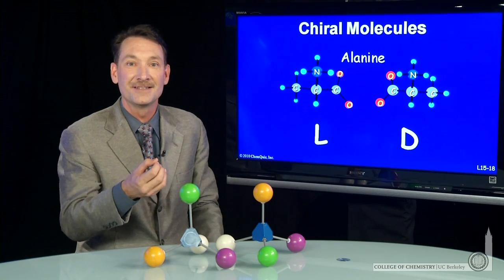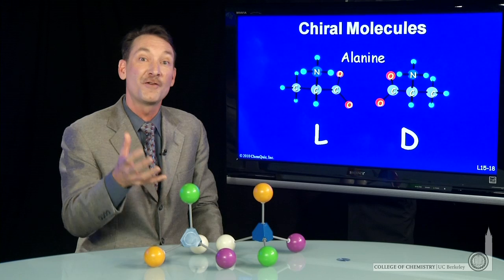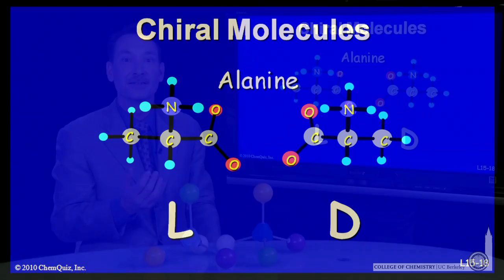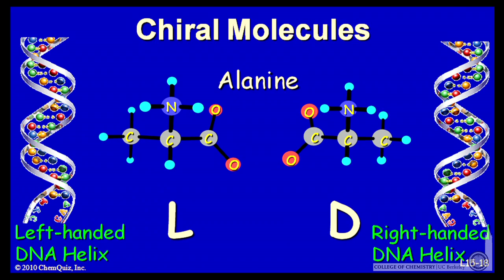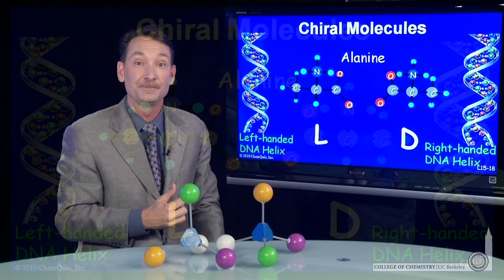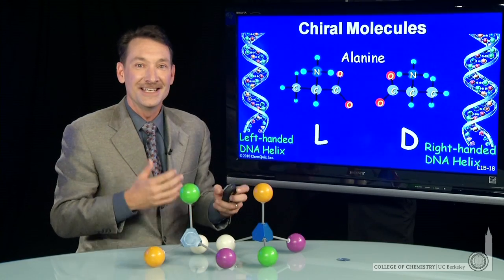There's a preference in nature for one hand over the other. Your DNA has a helical coil to it, and all your DNA helical coils in the right-handed direction. Left-handed coiling DNA isn't found in natural living systems.